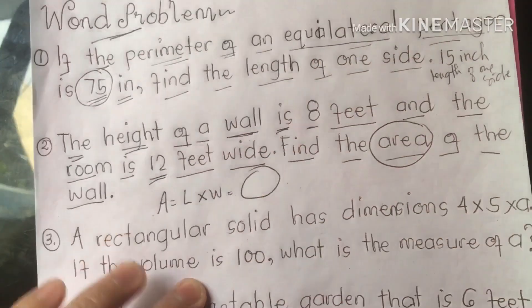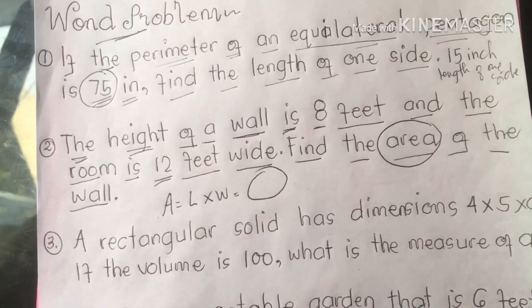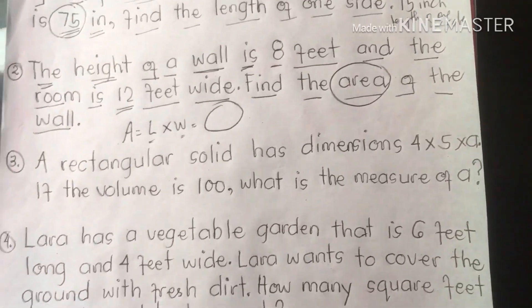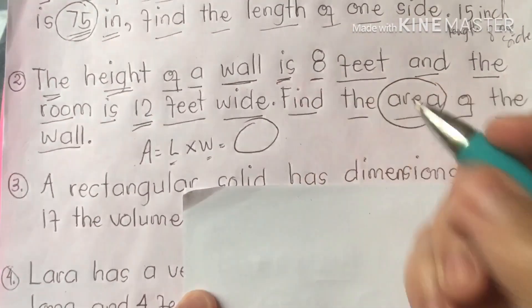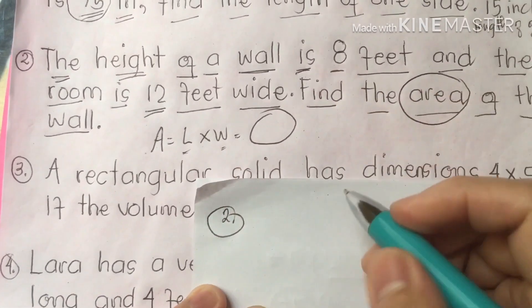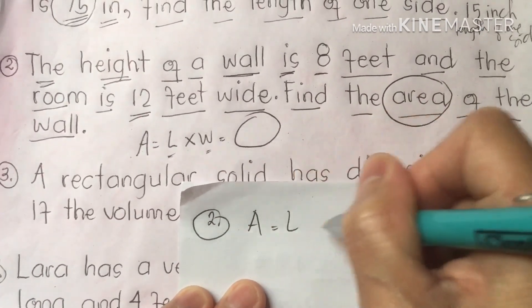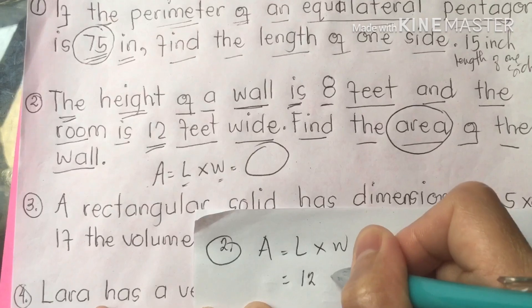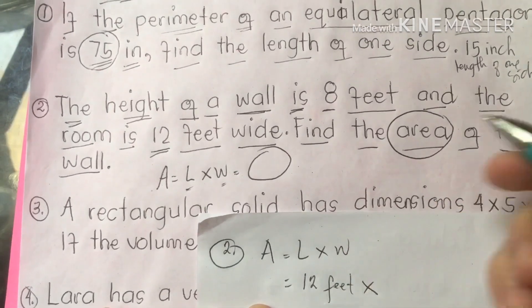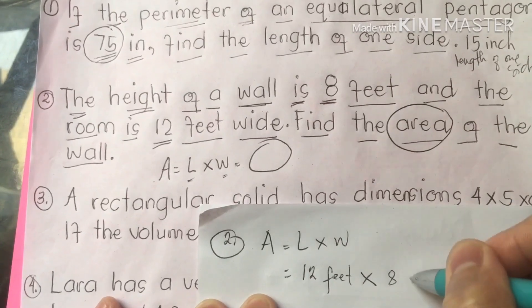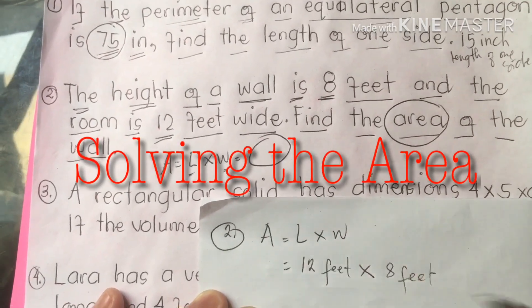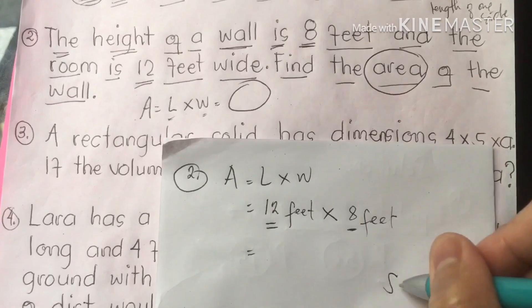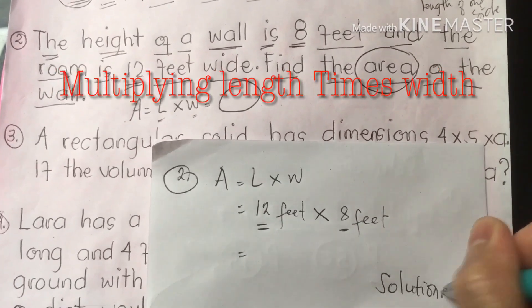Area, A, stands for area — remember, length times width equals our answer. We are going to multiply the length and the width. For number two: the formula is A equals length times width. Our length is 12 feet and our width is 8 feet. Now we are going to multiply them.